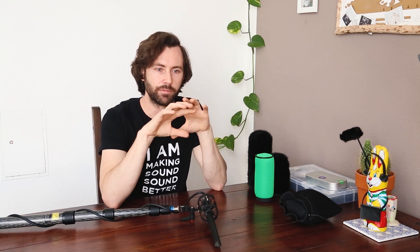Conversely, the omnidirectional mic is a sealed unit. The diaphragm contains pressure inside the capsule and back plate, and it measures the pressure all around the mic, causing those two objects to interact and create voltage differences.